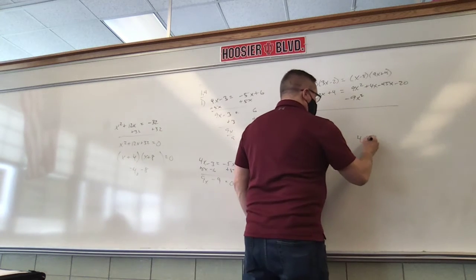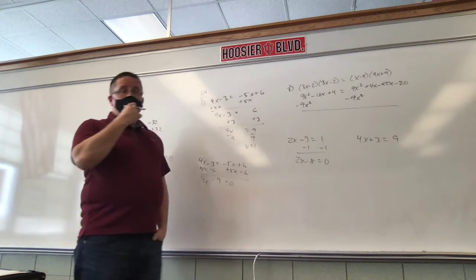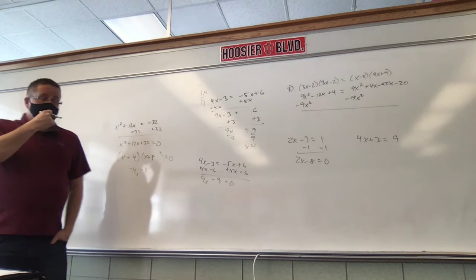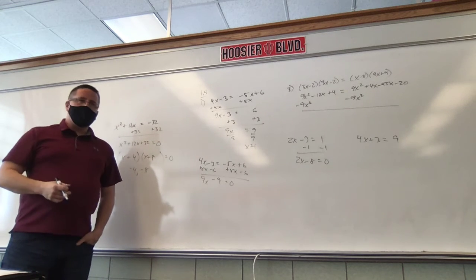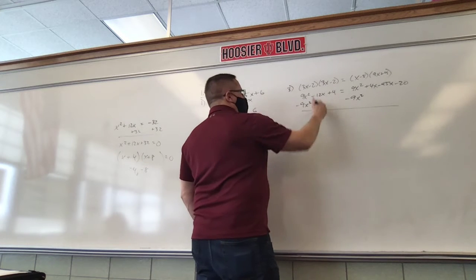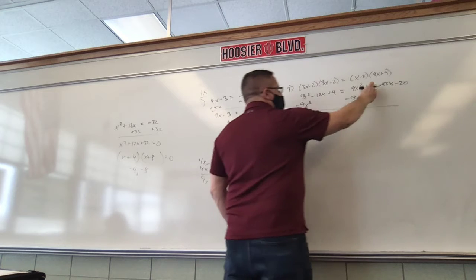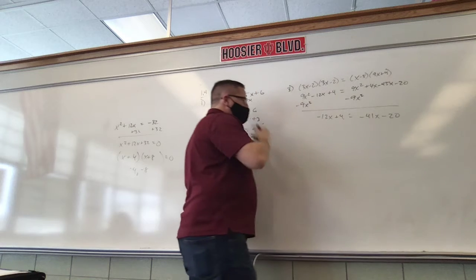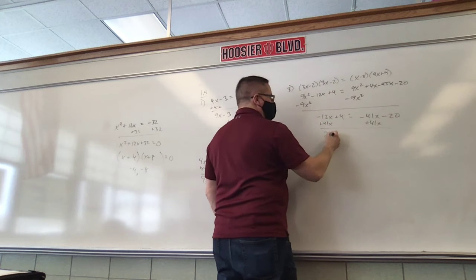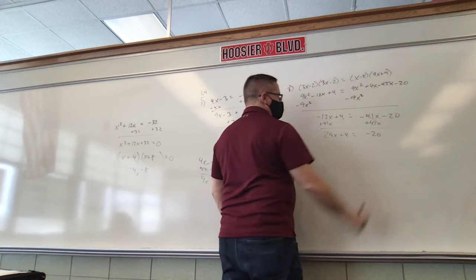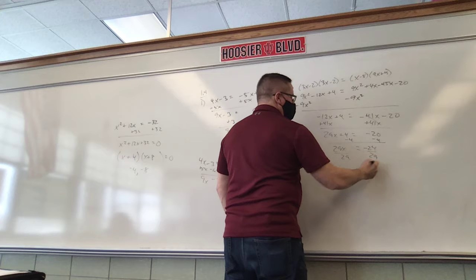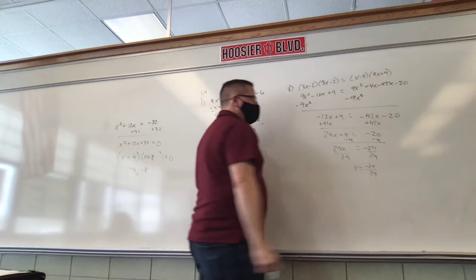Whatever you do to one side, you do to the other. So on this side we have negative 12x plus 4 equals negative 41x minus 20. I'm going to add 41x to each side. We have 29x plus 4 equals negative 20. Subtract 4 from each side. 29x equals negative 24. Divide by 29, and the answer is negative 24 over 29. Not a very nice number, but that happens.